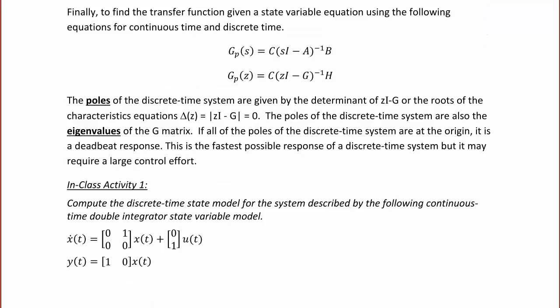In class activity 1: compute the discrete time state model for the system described by the following continuous time double integrator state variable model. x-dot of t equals the matrix [0, 1; 0, 0] times x of t plus [0; 1] times u of t, and y of t equals [1, 0] times x of t.